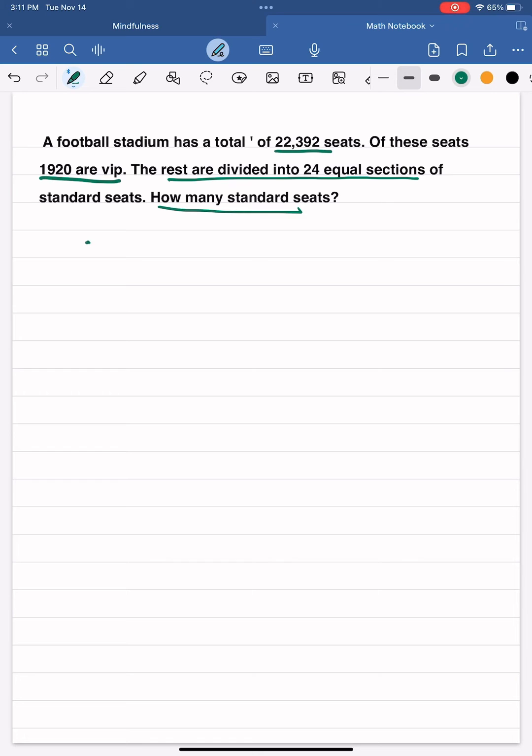So first I need to determine how many standard seats there are. I will begin by subtracting 22,392 minus 1,920, which are those VIP seats. When I subtract, I will need to regroup in my thousands place, and I'm left with 20,472.